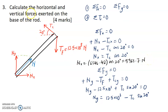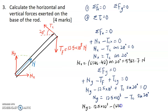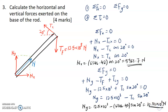Moving on to the last part: finding the vertical force exerted on the base of the rod, which is NY. NY equals 12.5 times 10 to the power of 3 minus TC sin 20 degrees. Substituting the value of TC as 6346.42 and multiplying with sin 20 degrees, the answer is equal to 10.33 times 10 to the power of 3 newton. These are the two final answers for question number 3.